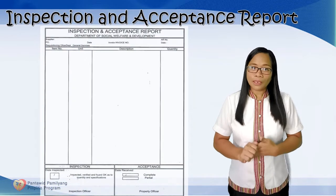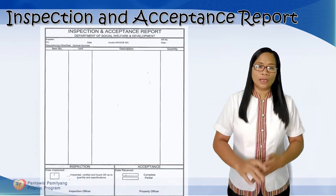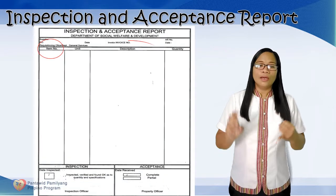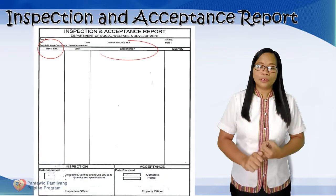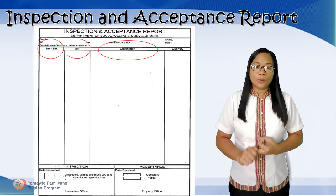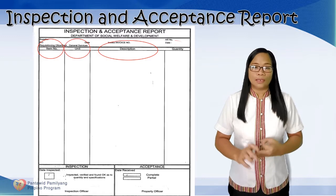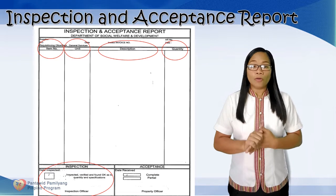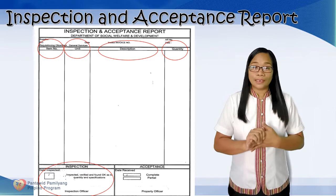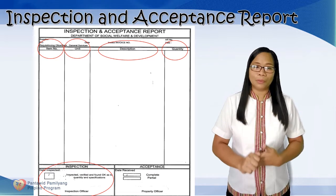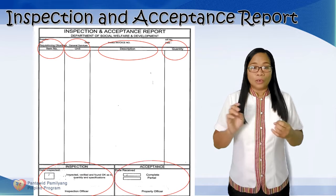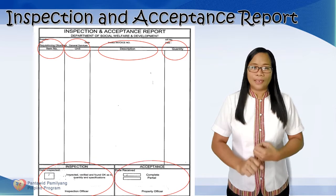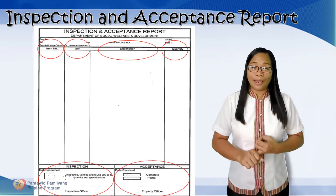The Inspection and Acceptance Report indicates the stock or property number, description, unit, and quantity, and is signed by the Inspection Officer for the designated inspector per province, the supply or property custodian, and the end user.